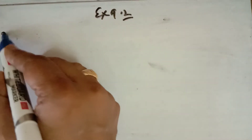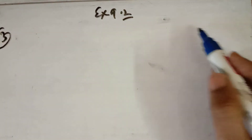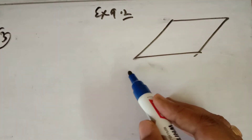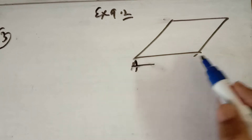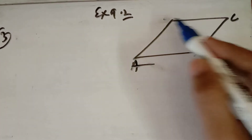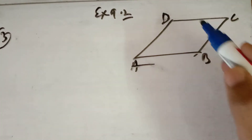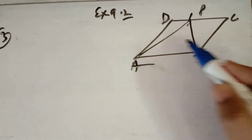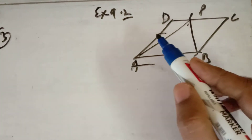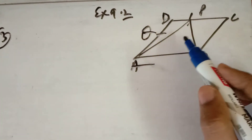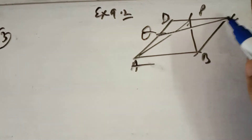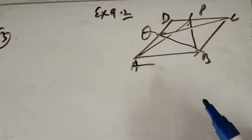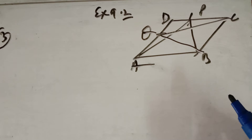Now in question number 3, it is given that there is a parallelogram ABCD. Two triangles are made on it — one by taking a point P on one side and another by taking a point Q on side CD — and you have to prove that the areas of these two triangles are equal.